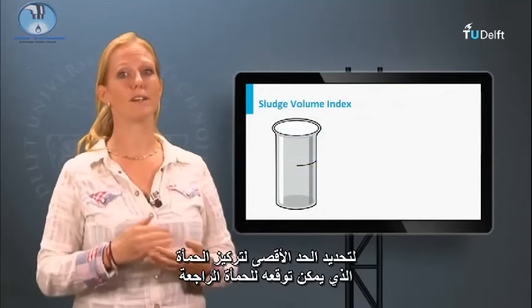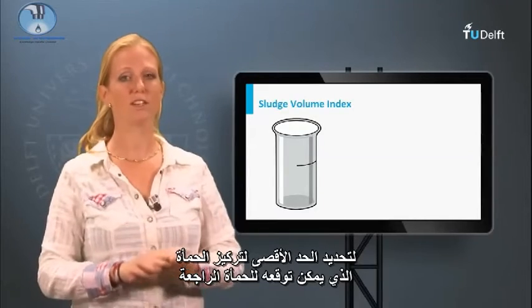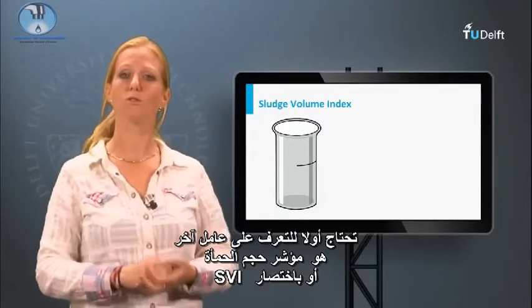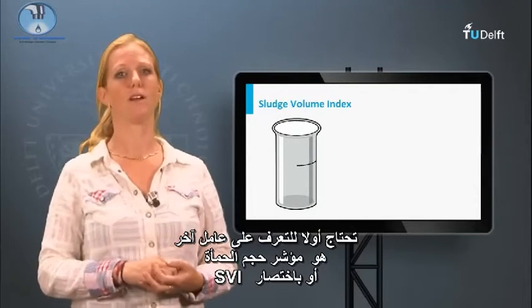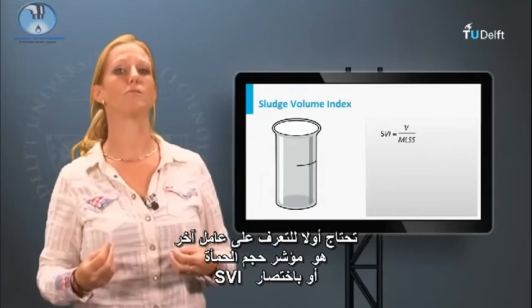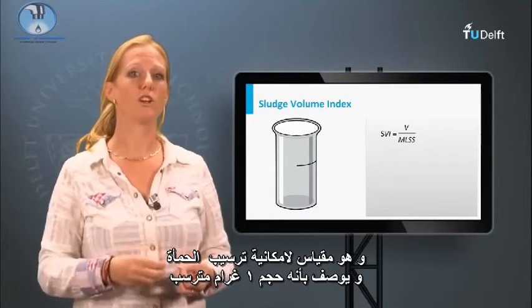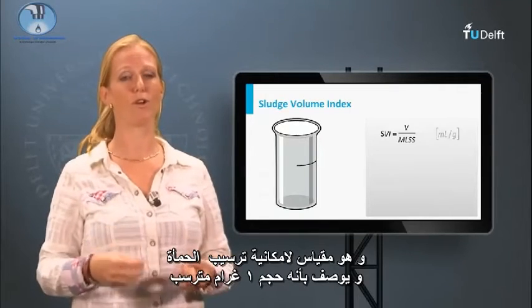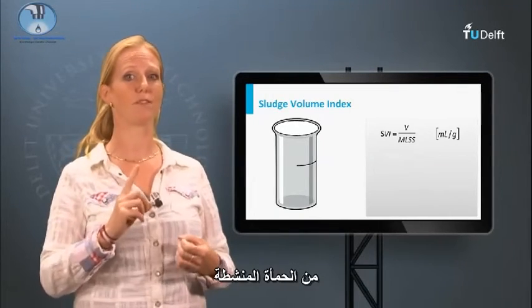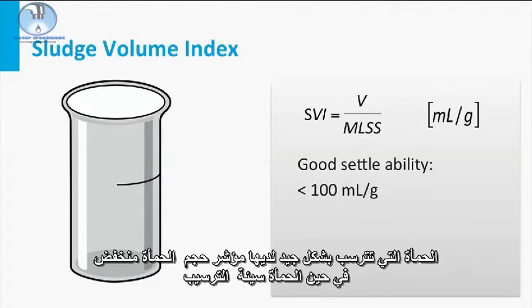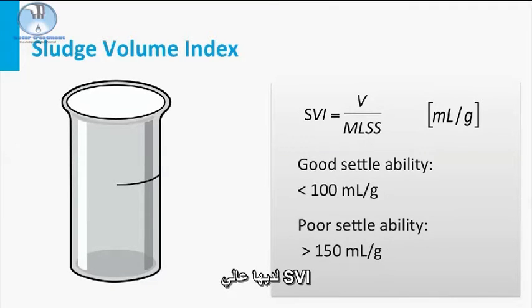To determine the maximum sludge concentration that can be expected in the sludge recycle, you first need to be introduced to another parameter, the sludge volume index, or SVI in short. This is a measure for the sludge settlability and is described as the volume of one gram settled activated sludge. Sludge that settles well has a low sludge volume index, while poorly settling sludge has a high SVI. The latter is known as bulking sludge.